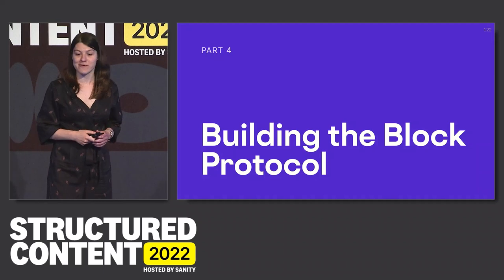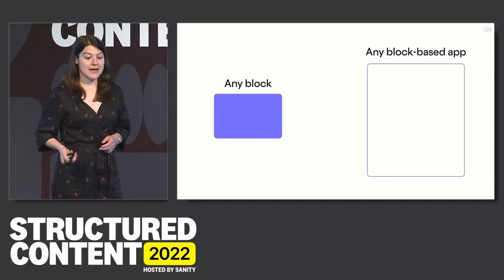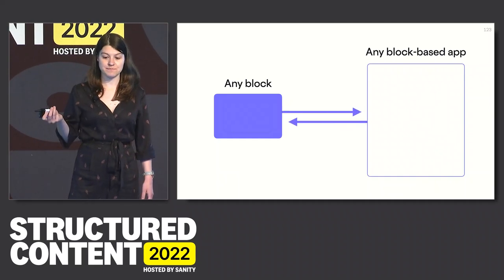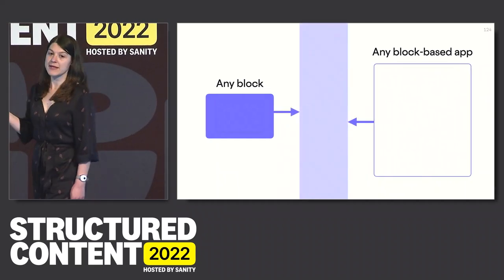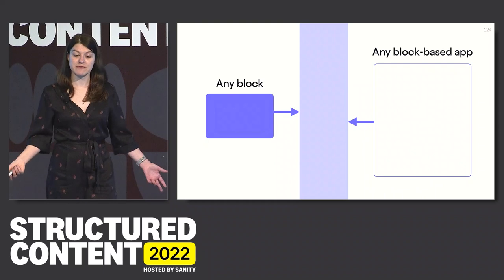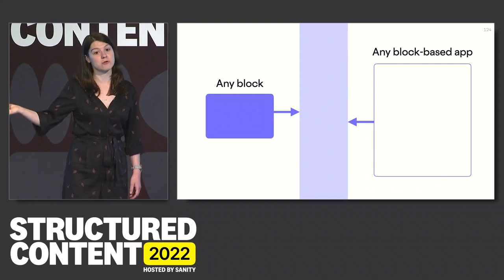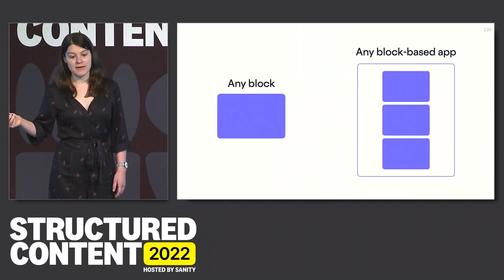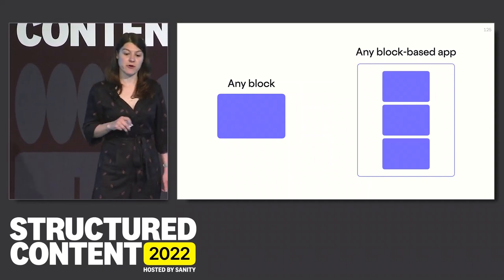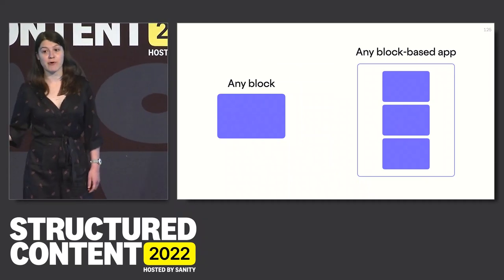Which brings me to our last section: the Block Protocol. The Block Protocol is a project by Hash that's hoping to address many of these issues. It is a standardized way for a block built by anyone to communicate with any block-based application. Rather than directly communicating, they both talk to the protocol — it's more like a medium that negotiates between the two parties, a set of rules that says what you can say and how you can say it. Any app that talks to this protocol can talk to any block that also talks to it, and vice versa. The developers of the block and the app don't have to know anything about one another — they can be total strangers and make their software compatible through this protocol.